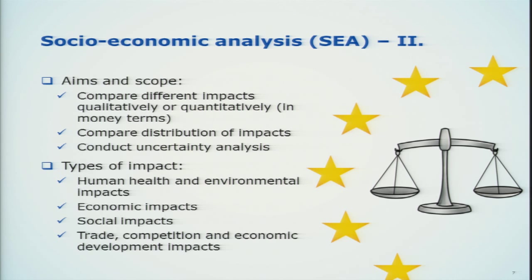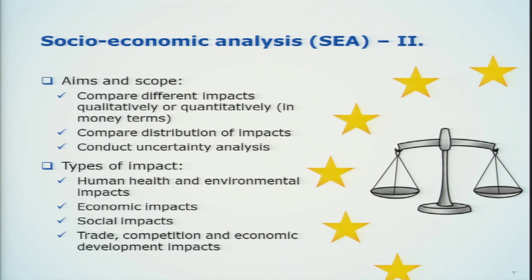The scope is that we compare impacts. We can do it qualitatively or quantitatively, preferably in monetary terms. Also important is the distribution of impacts — they may not be equally distributed over all countries or all groups within a country. And very important, as discussed in the session yesterday, is the uncertainty analysis, which comes into both the risk assessment part and the assessment of impacts. The impacts include human health and environmental impacts, but also economic impacts, social impacts such as unemployment, and what we call wider economic impacts — trade, competition, and economic development impacts — to provide a fuller picture to the decision maker.